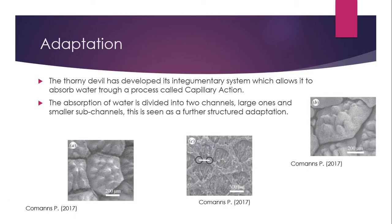The ability to transport water through this integumentary system has been achieved by the Thorny Devil by the process of capillary action. According to the article 'Absorption and Movement of Water in the Skin of the Australian Thorny Devil,' by using micro-computed tomography they were able to find that the skin is structured by scales that overlap, enabling them to collect water — like straws — possibly transporting it into the corners of the mouth. When the Thorny Devil opens its mouth, it uses its muscles to pull the water through after being absorbed by the capillary parts of its body.